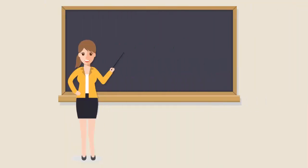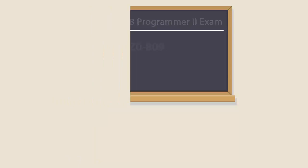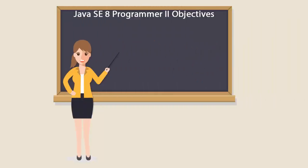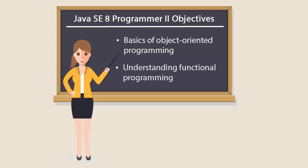To become an Oracle Java SE 8 Programmer 2 Certified Professional, you'll have to pass the 1Z0-809 exam. It covers basics of object-oriented programming and understanding functional programming.